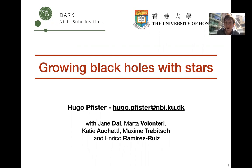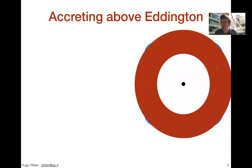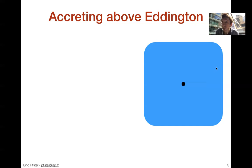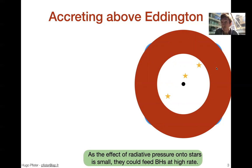So why are we interested in growing black holes with stars? In the classic limit of accretion, you have a black hole surrounded by cold gas falling through gravity onto the black hole, and mass is converted into energy which pushes the gas away, creating a limit we call the Eddington limit. But if in addition to gas you put stars, stars form a collisionless fluid — they do not suffer from pressure — and so maybe they could fall onto the black hole at a very high rate.